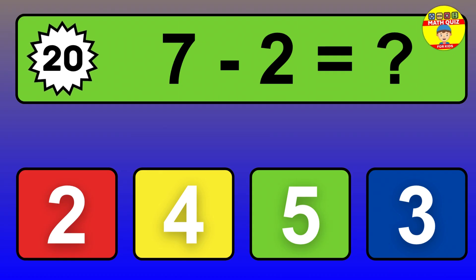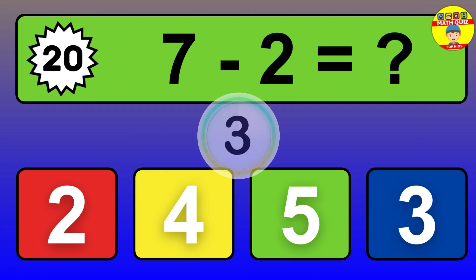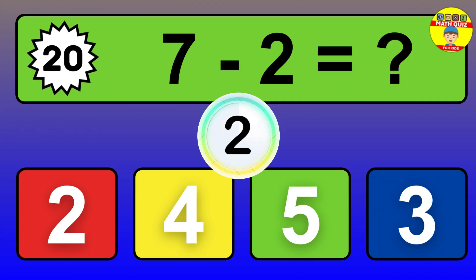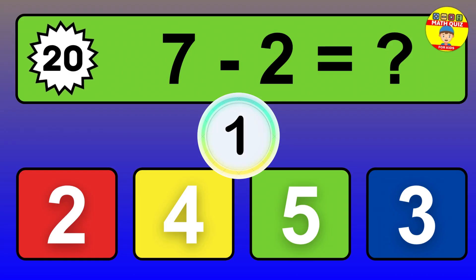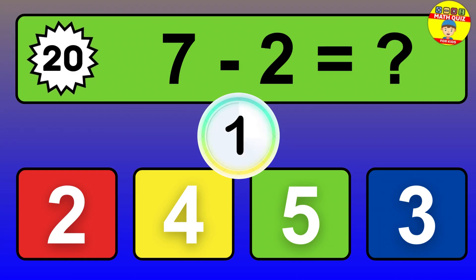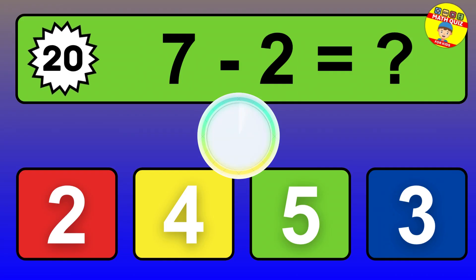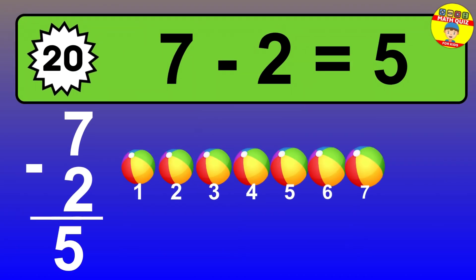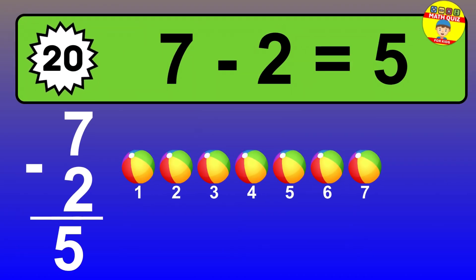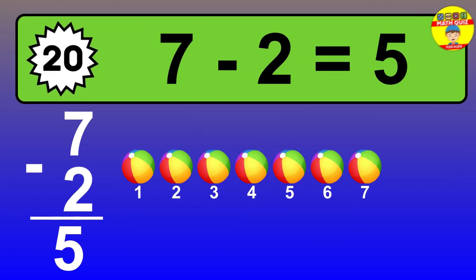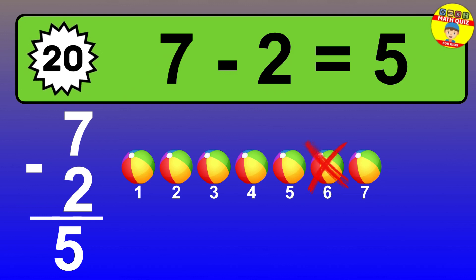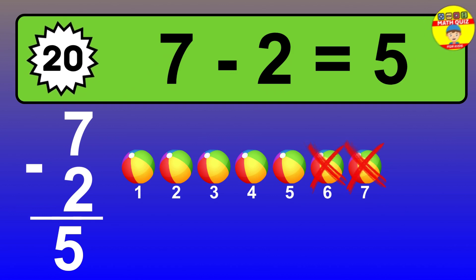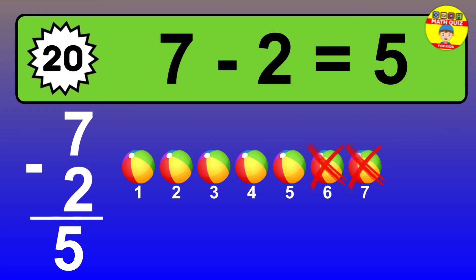Question 20. 7 minus 2 equals what? So the answer is 7 minus 2 is 5. Let's count it. 1, 2, 3, 4, 5.